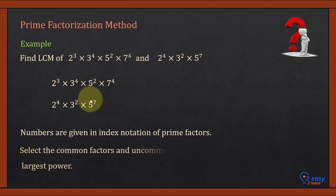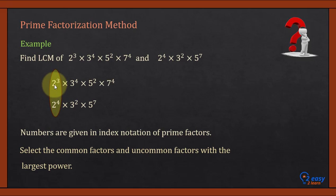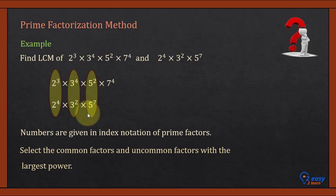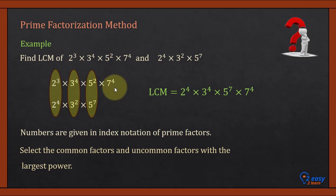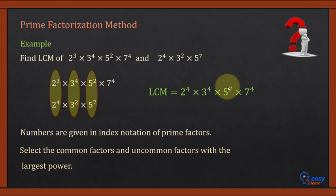Write the numbers in two rows and note the common and uncommon factors, selecting those with the largest power. 2 is common — largest power is 4, so we select 2⁴. 3 is common — largest power is 4, so we select 3⁴. 5 is common — largest power is 7, so we select 5⁷. 7⁴ is uncommon, so we include it too. Therefore, the LCM is 2⁴ × 3⁴ × 5⁷ × 7⁴.